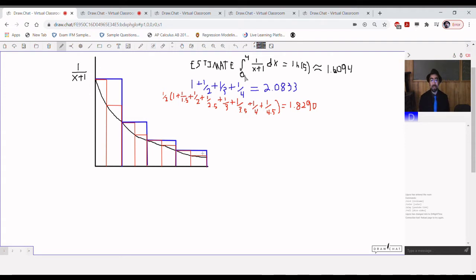So if I were to integrate that from 0 to 4 I get the natural log function because integral of 1 over x plus 1 is ln of x plus 1, which gives me ln 5 minus ln 1. ln 1 is just 0 so it's just ln 5. With the calculator we get 1.6094.